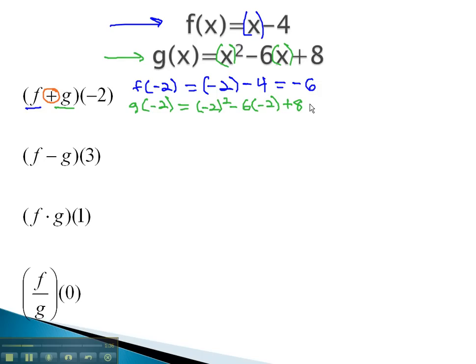Notice, negative 2 squared is 4, plus negative 6 times negative 2 is 12, plus 8, and we end up with a total of 24.